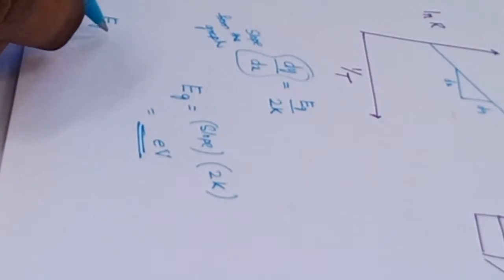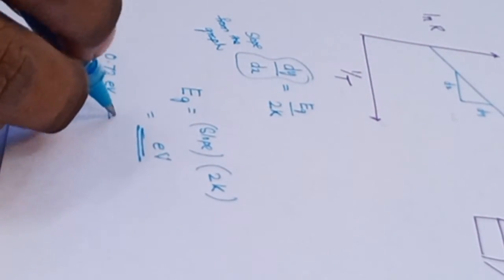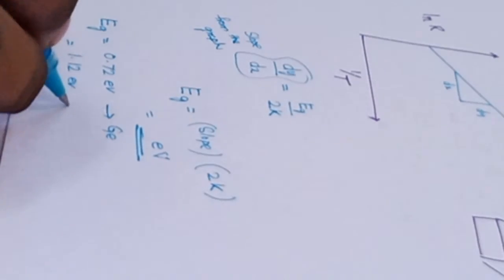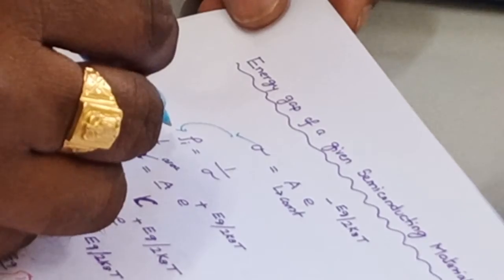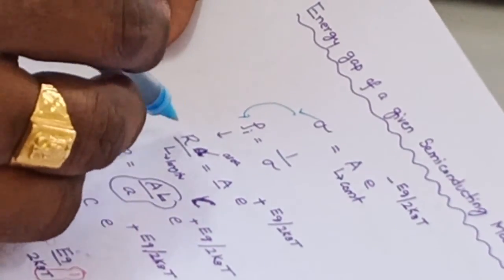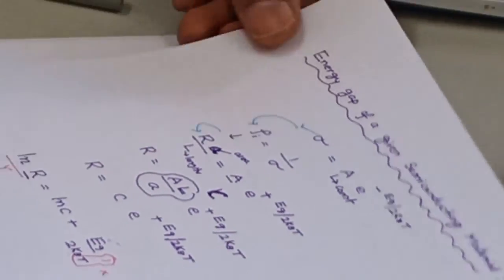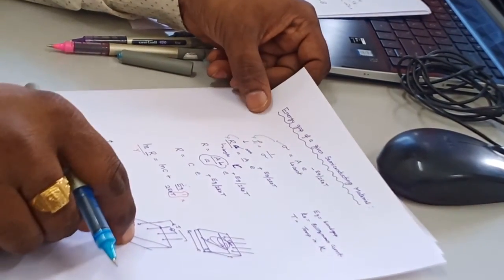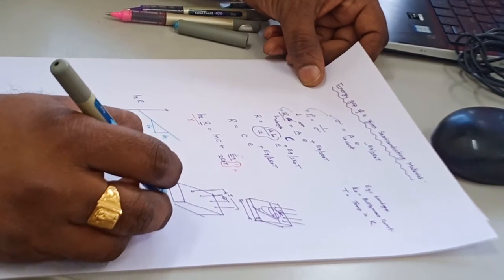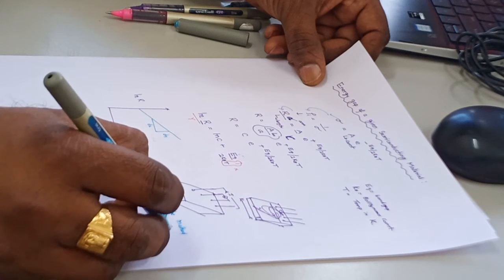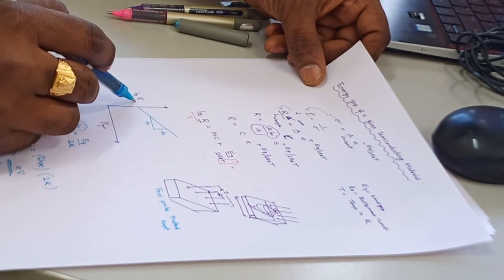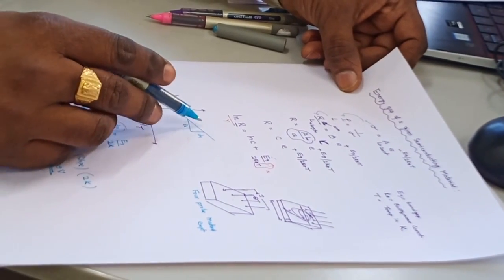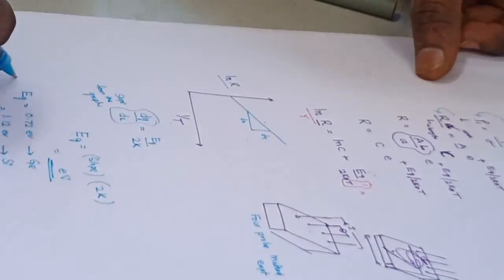We will get the answer in terms of electron volts. If the energy gap value comes out to approximately 0.72 eV, this belongs to germanium. If it is approximately 1.12 eV, this belongs to silicon. So this is how the energy gap of a given semiconductor material can be obtained using conductivity, transformed into resistivity, and then resistance depending on area and length. In the four-probe experiment we pass current, measure voltage, vary the temperature, and from the straight-line graph of ln(R) vs 1/T we calculate the energy gap. Thank you.